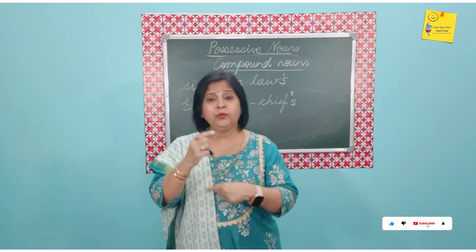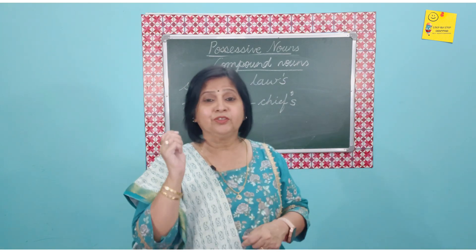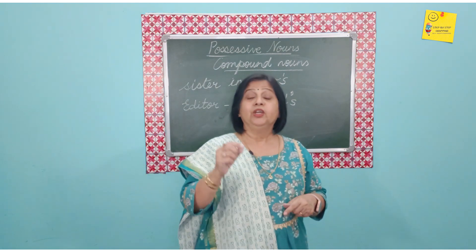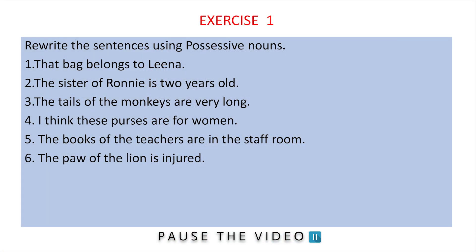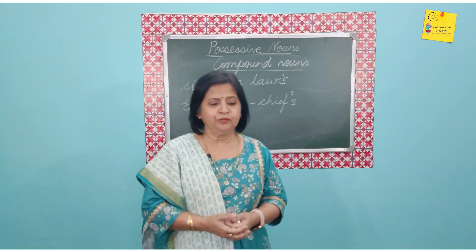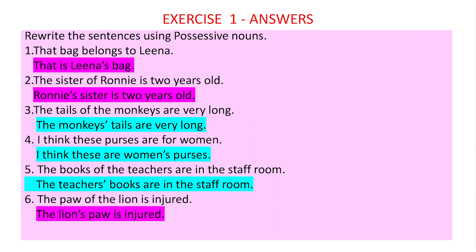Now for the answer time — write down your answers. The pink highlighted ones are in the singular form and the blue highlighted ones are in the plural form. The bag belongs to Lena — Lena being one singular person, so Lena's. Similarly Ronnie's sister. The tails of the monkeys — monkeys is plural, so just apostrophe after the S: monkeys'. Women is irregular plural, so women's. Teachers is plural ending in S, so teachers' with just an apostrophe. And the paw of the lion — lion is singular, so lion's.